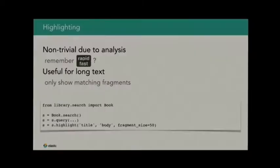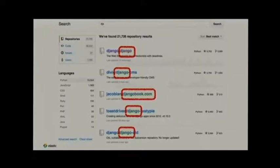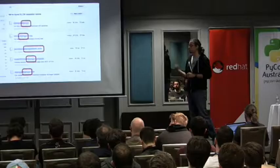That is why you need to delegate highlighting to Elasticsearch — it would be non-trivial to do on your own. It is very useful if you have a long text, like a book body that people can search through. Then you just want to show them the fragments — the individual passages that actually matched — not transfer the whole book, but only the relevant parts. How do you use this? It's super simple: once you have the search, just call the highlight method on it, give it a list of fields to highlight, and maybe some optional options. Super simple.